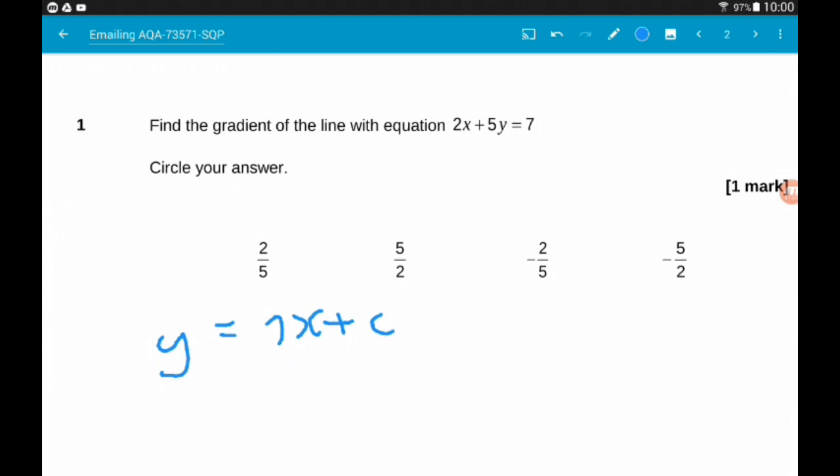So if we take away 2x, we get 5y is 7 minus 2x. And then dividing by 5 gives us y is equal to 7 fifths minus 2 fifths x. Our gradient then is minus 2 fifths.